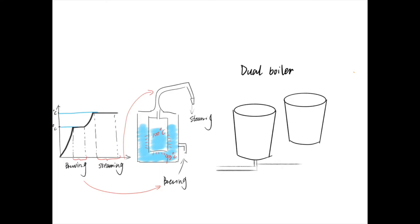In a dual boiler machine, two different boilers are used to boil water to different temperatures. This kind of boiler can be used to produce large volumes of both brewing water and steaming water.